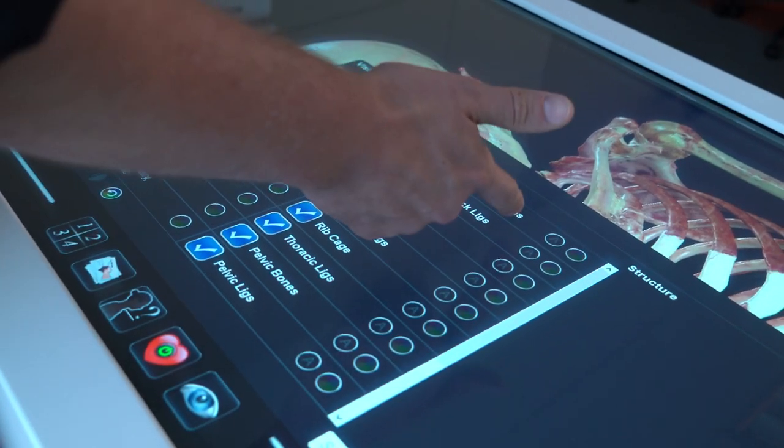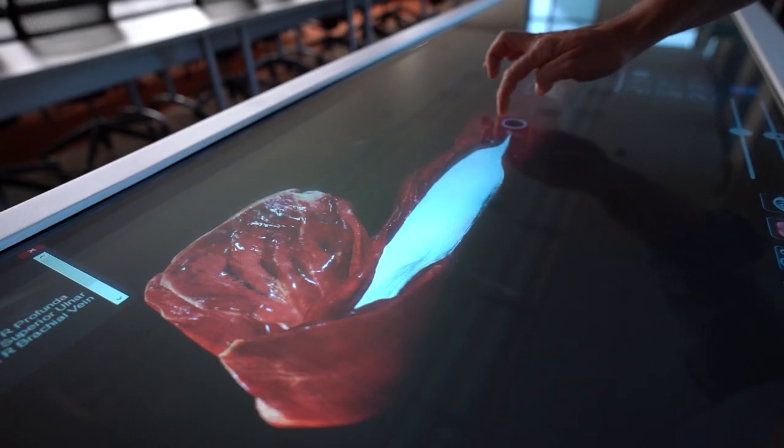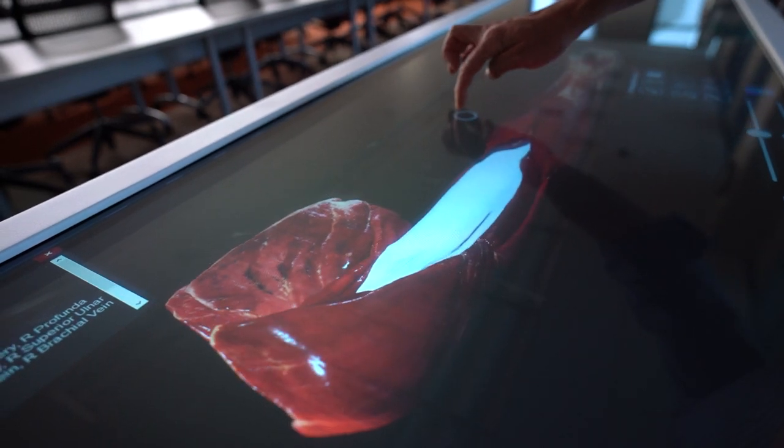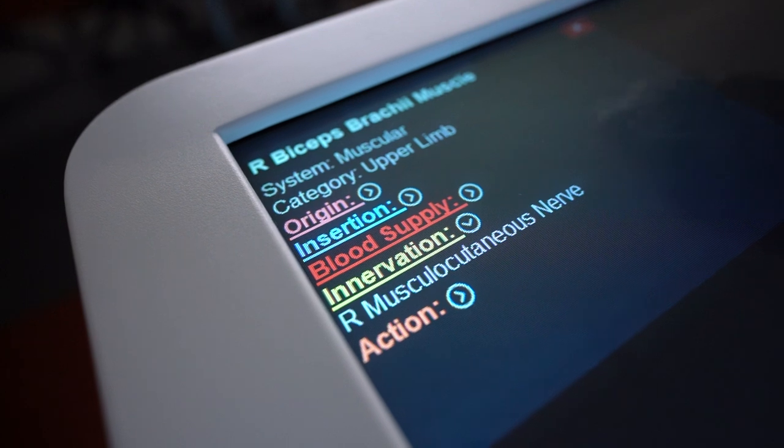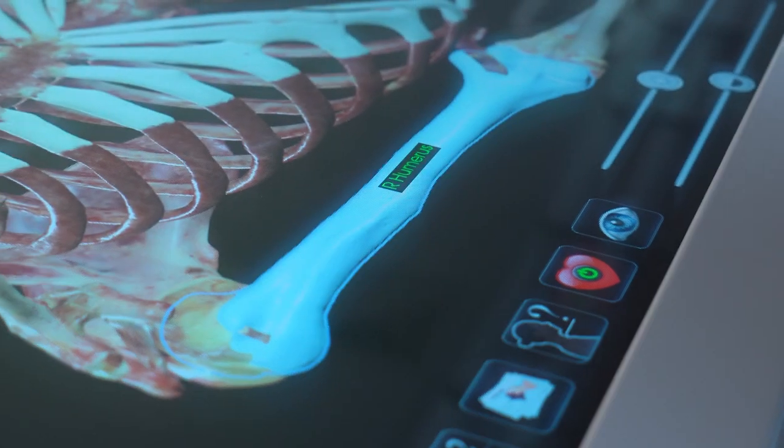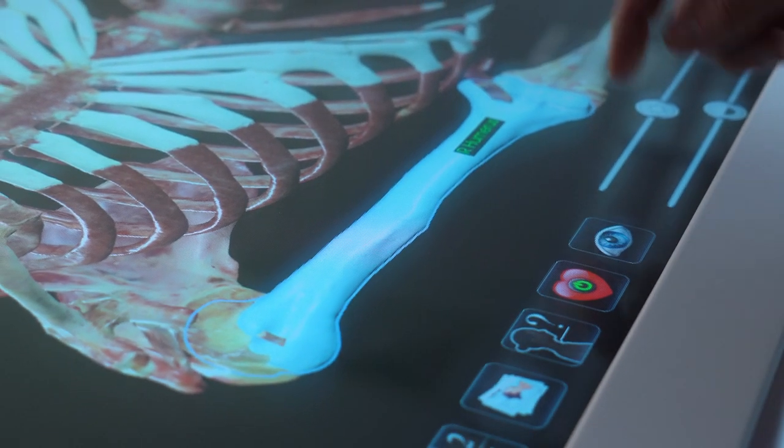Students will also have the ability to do dissections and again with the annotation we can get origin insertions, blood supply, all the information that we would have to flip through several books to get through. So step-by-step easy dissection for our students.